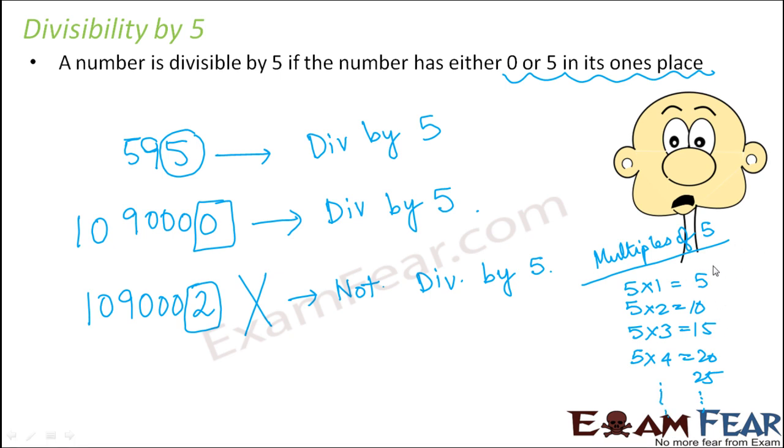So when you look at these multiples, what do you observe? Very carefully, you would observe that all the multiples of 5 have either 5 or 0 in its units place. That is why this rule has been placed.